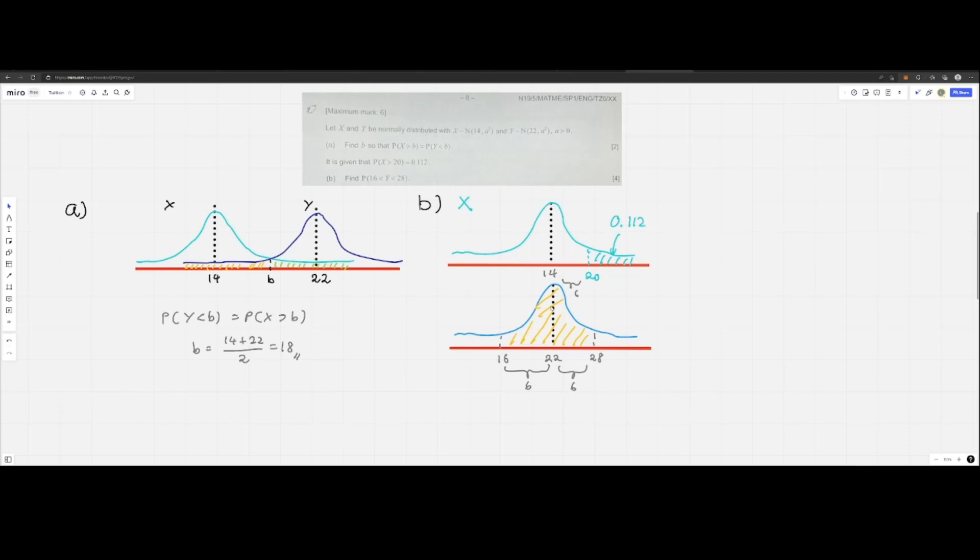This enables us to conclude that since both distributions are similar, these two green areas are each 0.112. The orange area, which is the region that we are interested in,